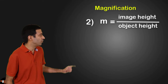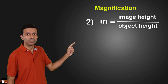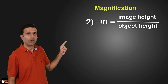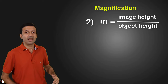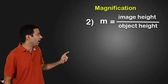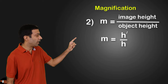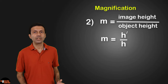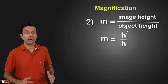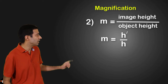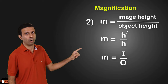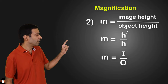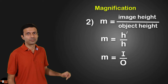The second formula is regarding magnification. Magnification M is defined as image height divided by the object height. In symbol form, it's written as M = H'/H, where H' is the image height and H is the object height. Or in some textbooks, you might find it as M = I/O, where I is the image height and O is the object height.